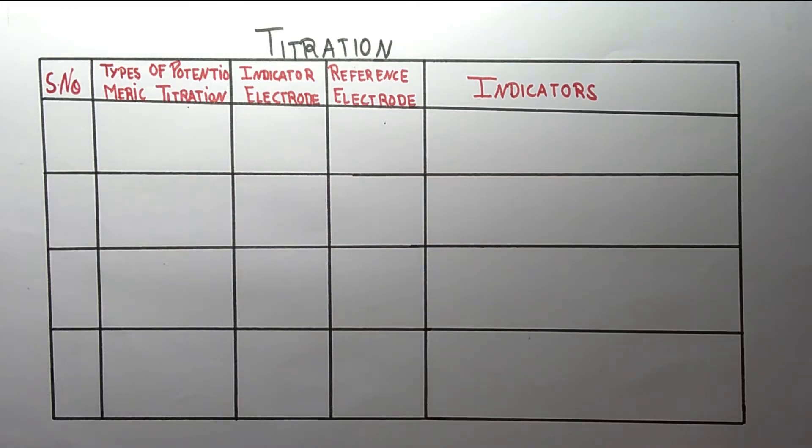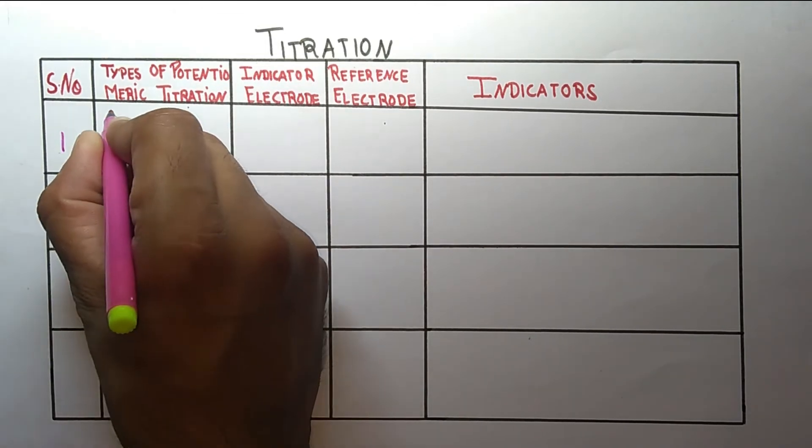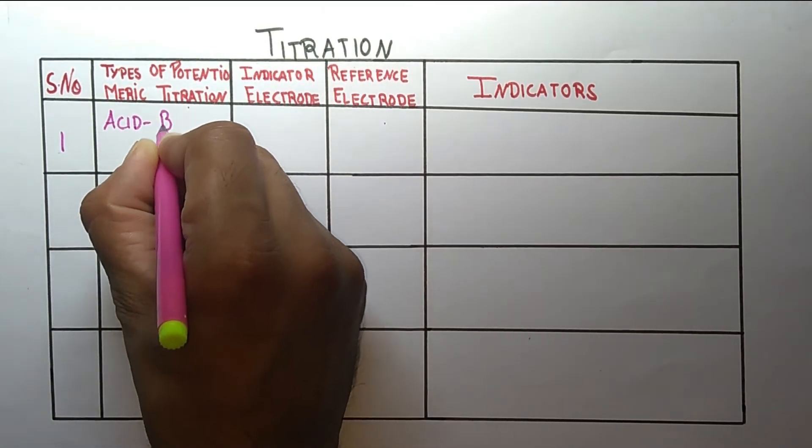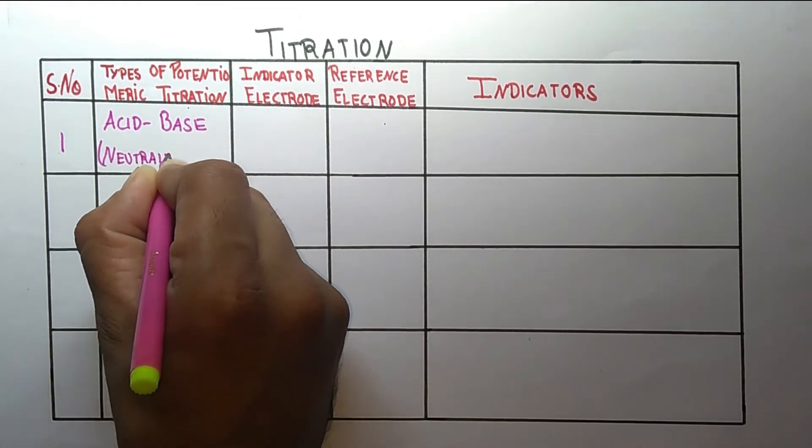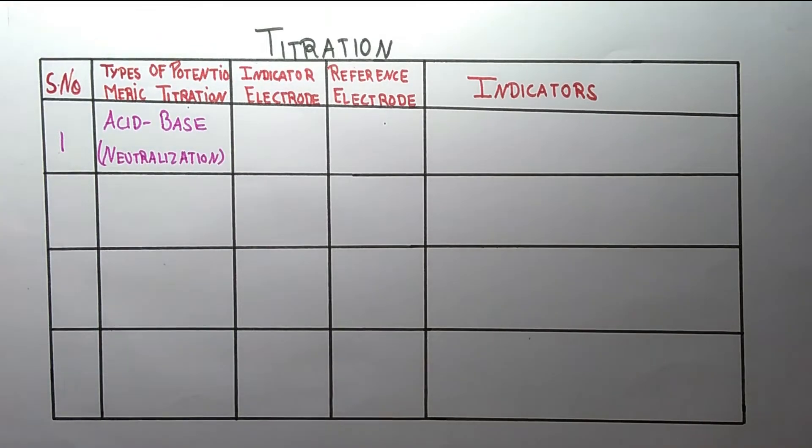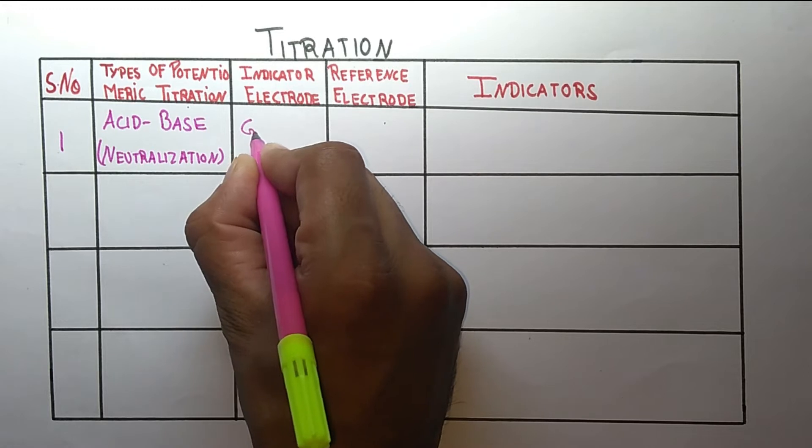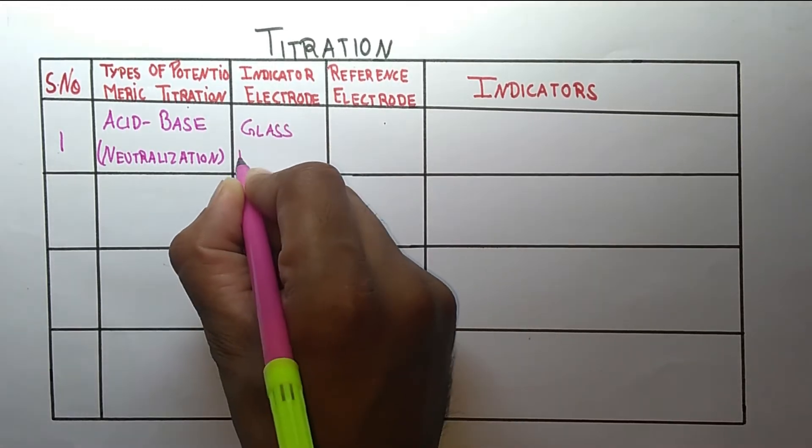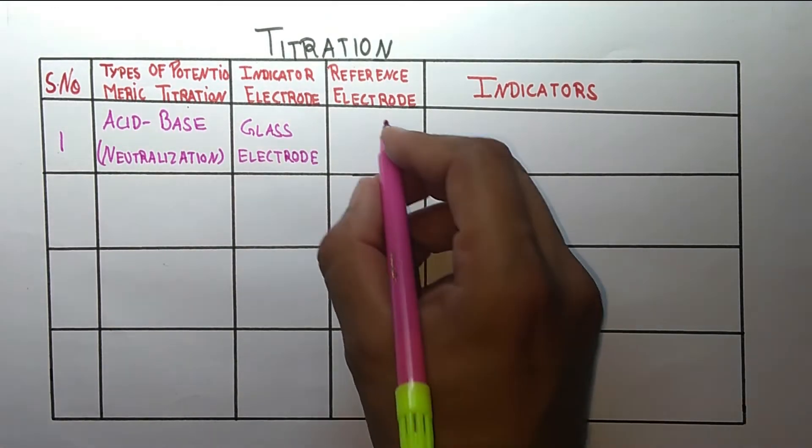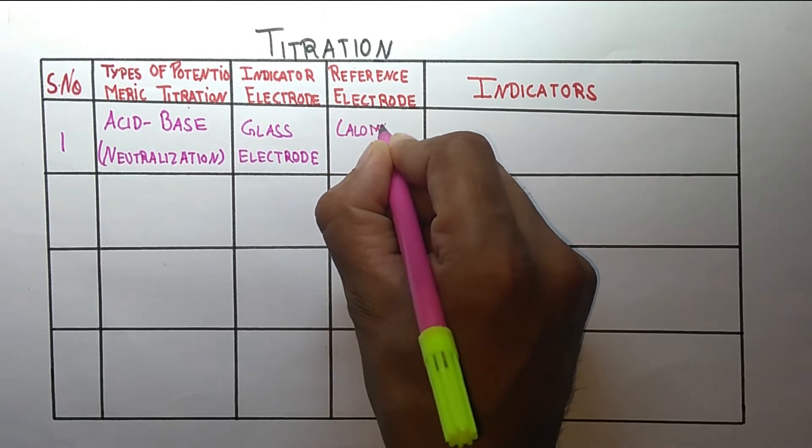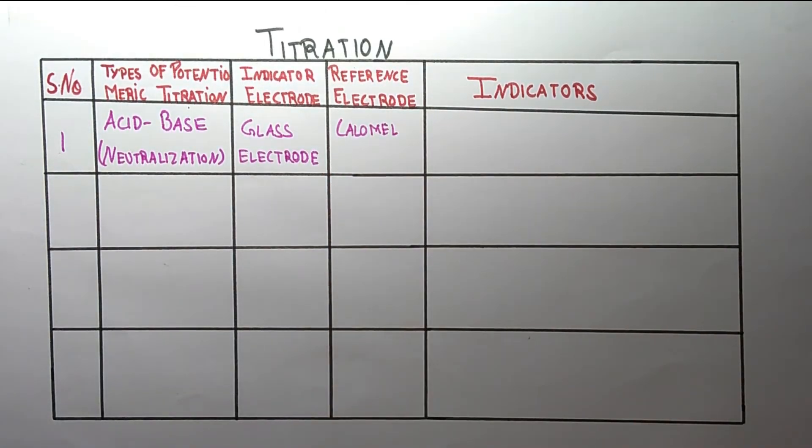Coming on the first one titration, that is acid-base titration. In acid-base titration the indicator electrode is glass electrode, and the reference electrode in acid-base titration is calomel electrode. What will be the composition of calomel electrode, that is Hg2Cl2.